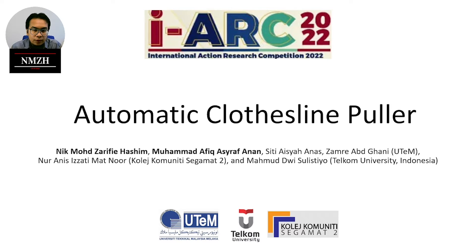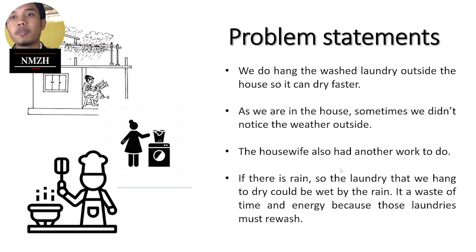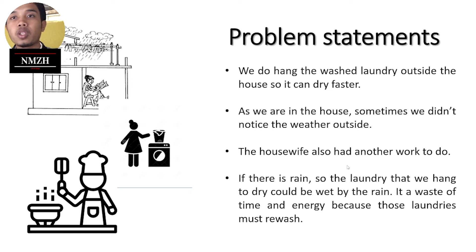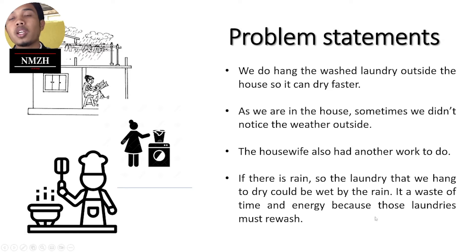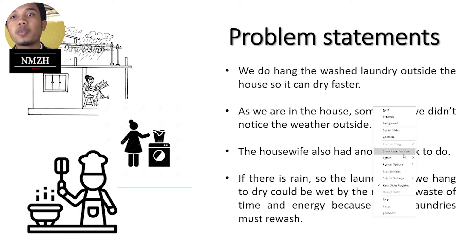The problem statement of this project is that when we hang our clothes outside to dry, there could be a rainy day which makes our clothes wet. When our clothes get wet because of the rain, we need to rewash them, and if we don't rewash them, the pH in the rain could make our body itchy.